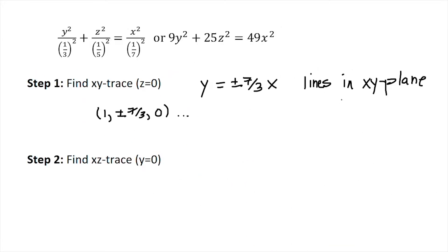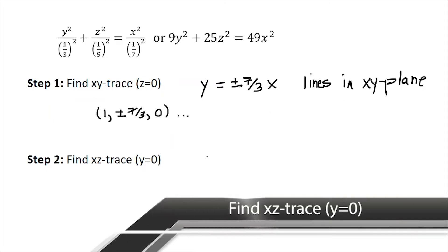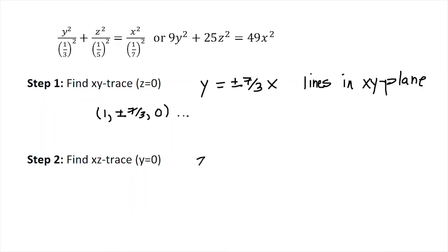Step two, I want to find the xz-trace where y = 0. When I plug in y = 0 to my original equation, I'm going to end up with z = ±(7/5)x. So again, lines in the xz-plane.